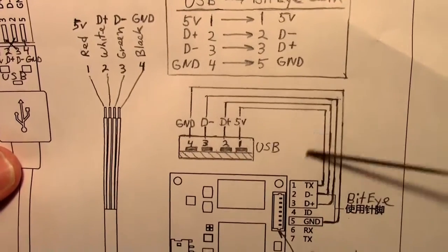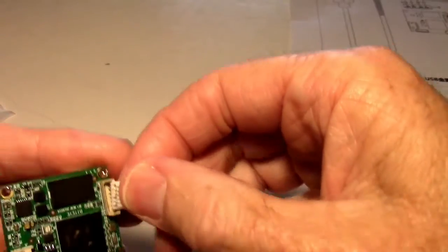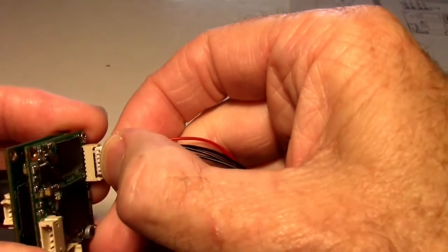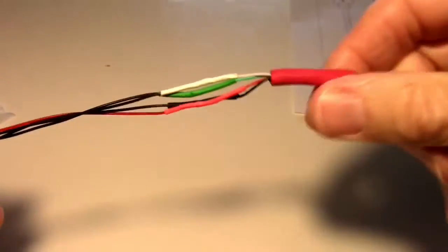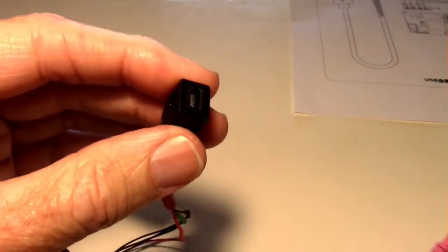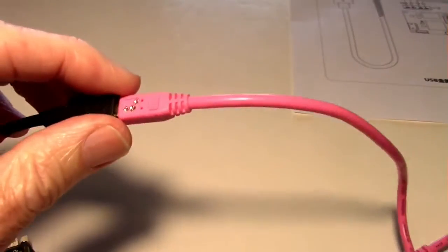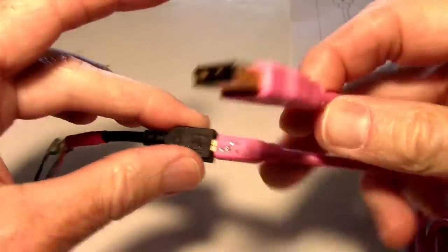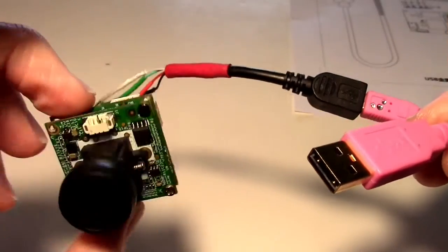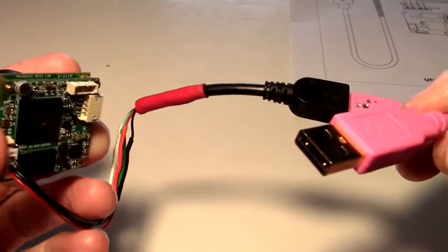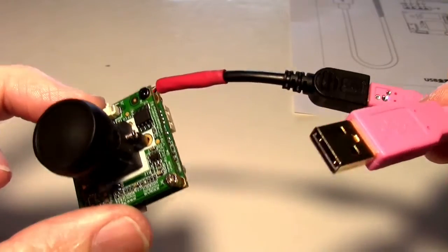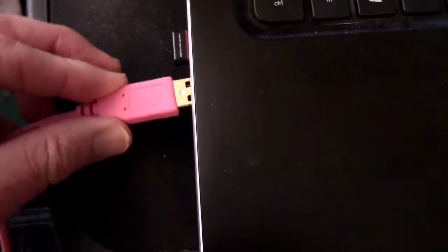Then you just have to worry about the data lines. The data lines white and green go into pins two and three on here. You can just see that on the schematic right there. Two goes to two and three goes to three. How hard can that be? Very simple. Then you just plug this in here. Make sure you get the red wire at the top. Plug the other end into your USB cable. The extension goes to the USB cable, the other end goes in your computer.